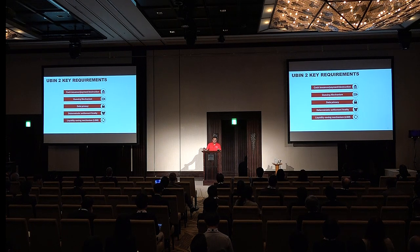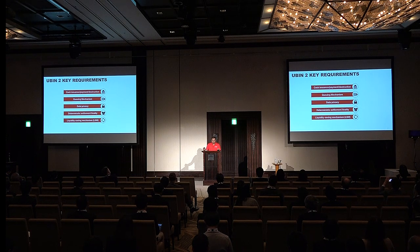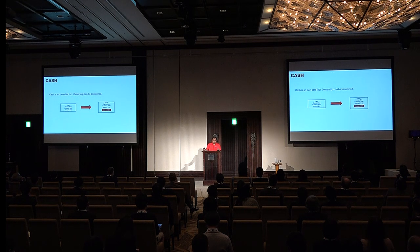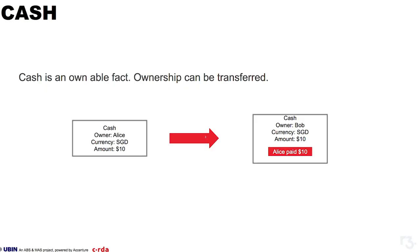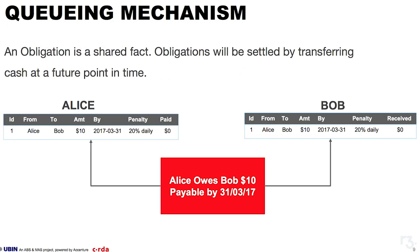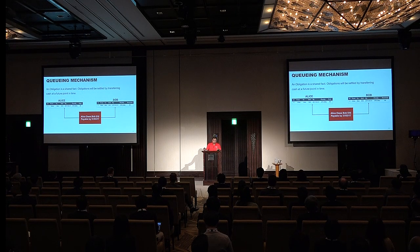When we talk about Corda, we represent cash as an ownable fact — ownership can be transferred. For example, Alice owns $10 cash, and she could transfer it to Bob, making a payment where the owner changes to Bob. Obligations, however, are a shared fact — Alice and Bob share this fact at any point in time, as Alice owes $10 to Bob payable by a certain date with a potential penalty. These obligations can then be queued to form a queuing mechanism.